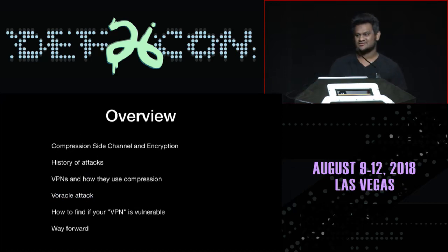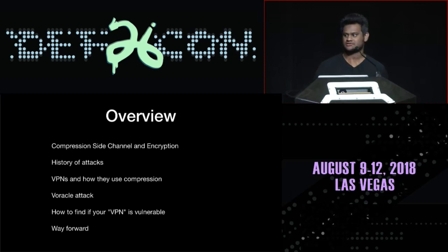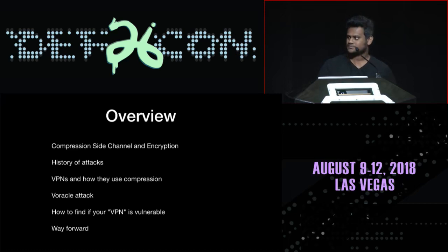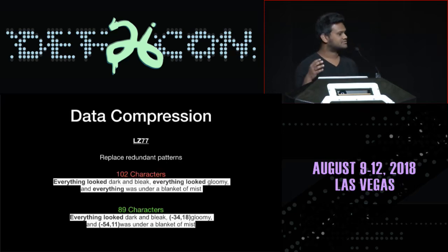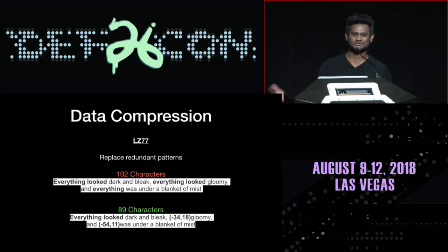You might be wondering what is the topic about today: compression oracle attacks on VPN networks. What I'm going to talk about today — the end goal — is to basically break VPN networks in a very generic fashion. I'm going to specifically take one of the well-known VPN providers, OpenVPN, and we'll see a demo of how to leak secrets from encrypted traffic. Let's start with compression, because that's the core of what I'm going to talk about today. I'll explain in detail what is compression, what is an oracle, what is a compression oracle, and how these attacks work in general, and then go into how this applies to VPNs.